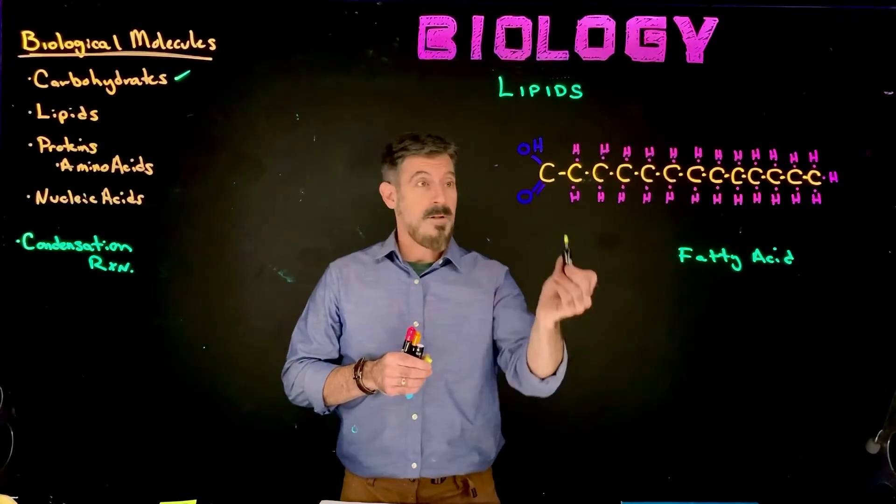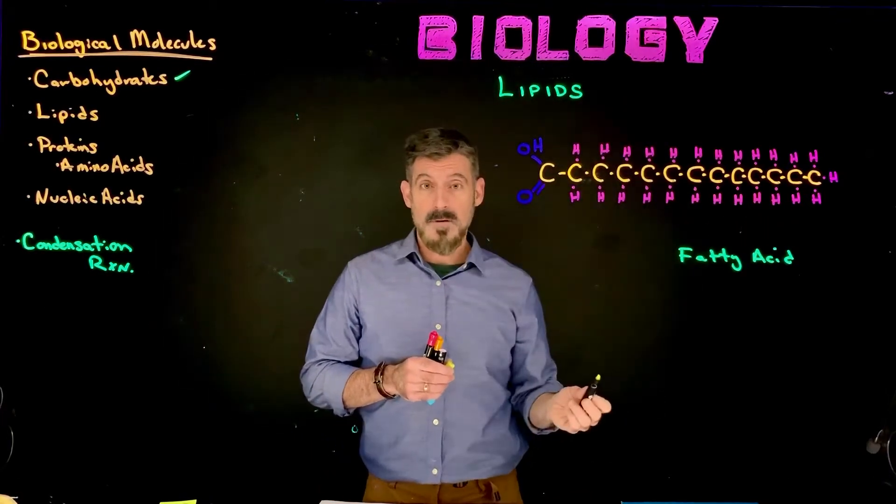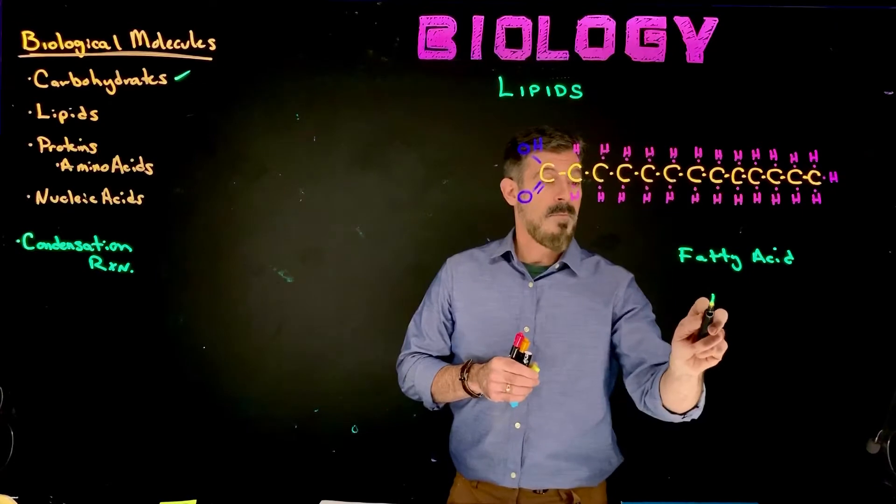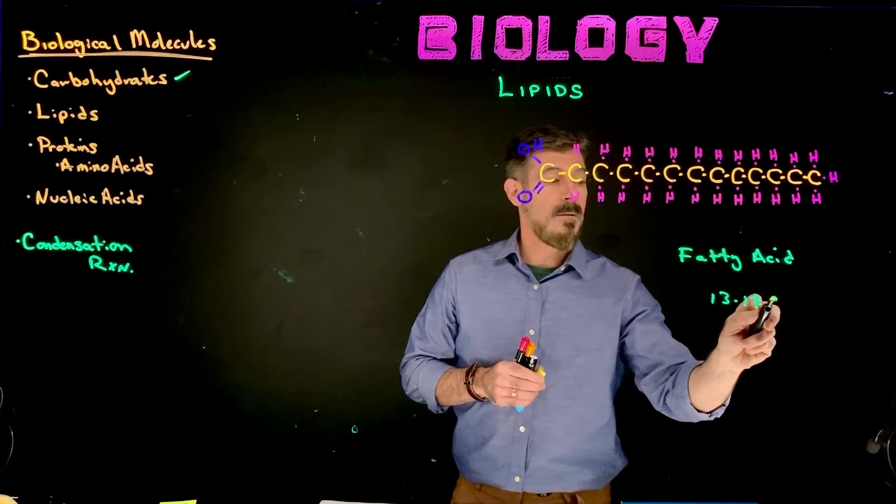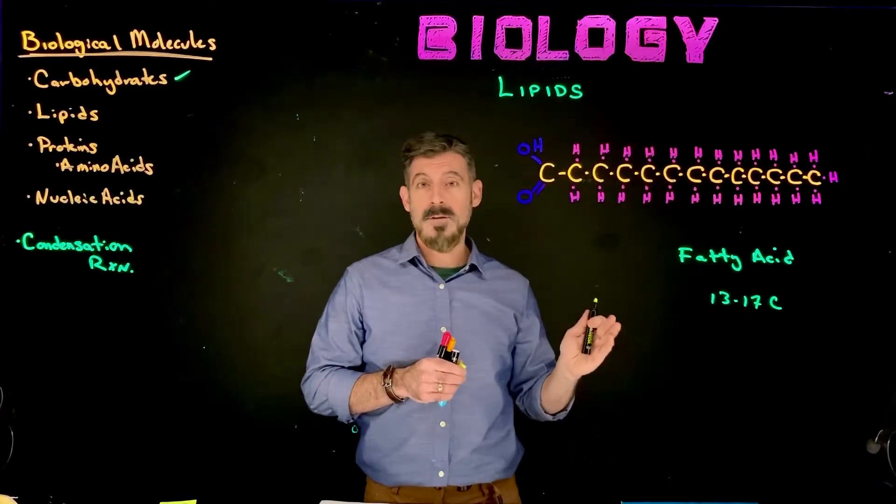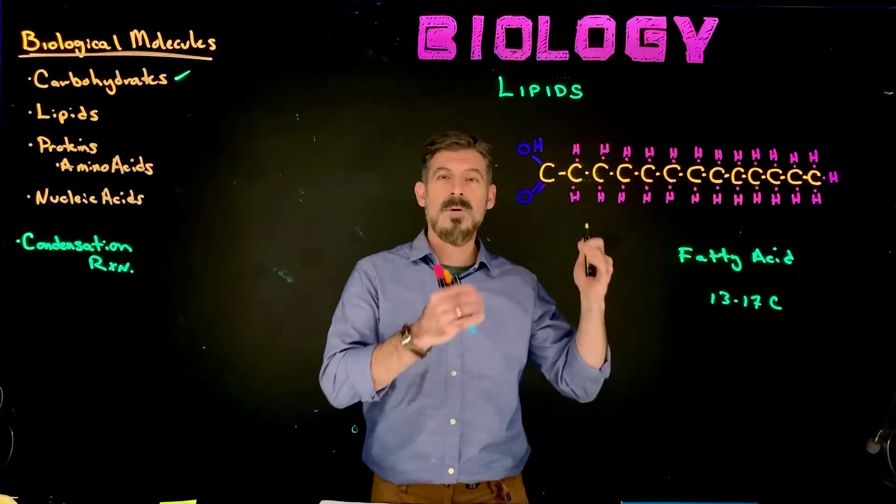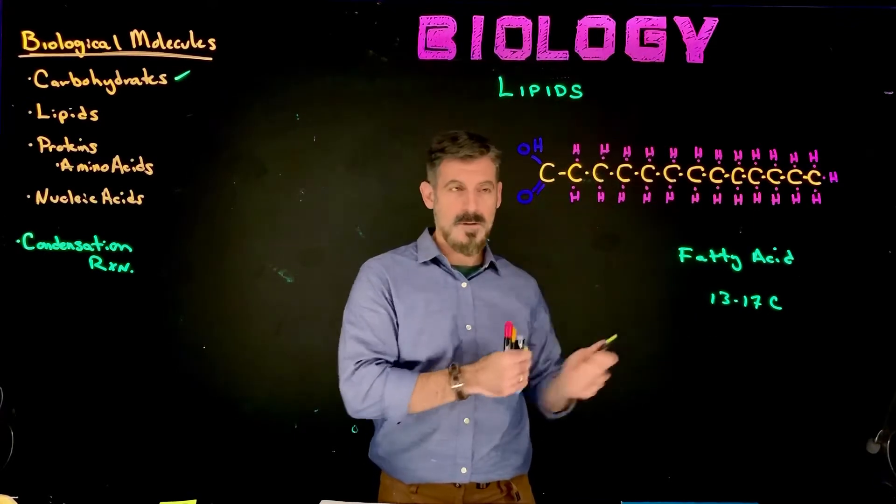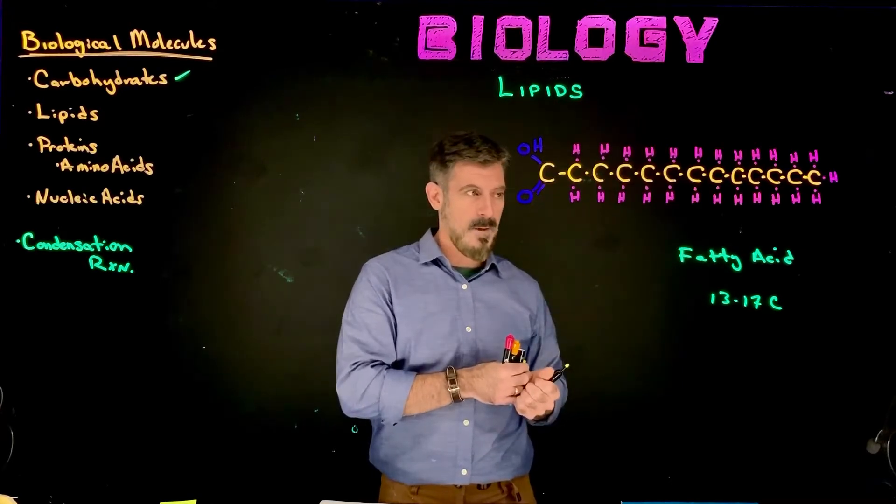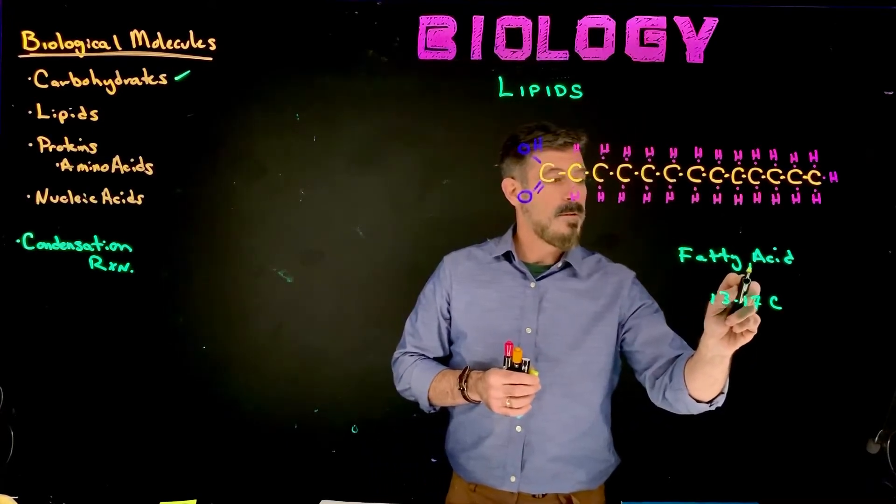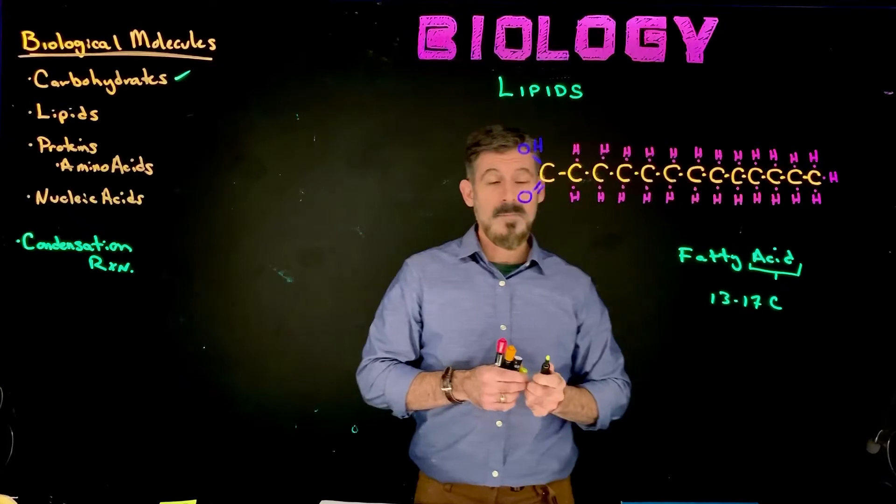You can see it is a long chain of carbons. So 13 to 17 carbons are common. It's variable, the length of these carbons here. And then different specific fatty acids will have different numbers of carbons that make them up and other characteristics as well. And then there's going to be this, the acid part.